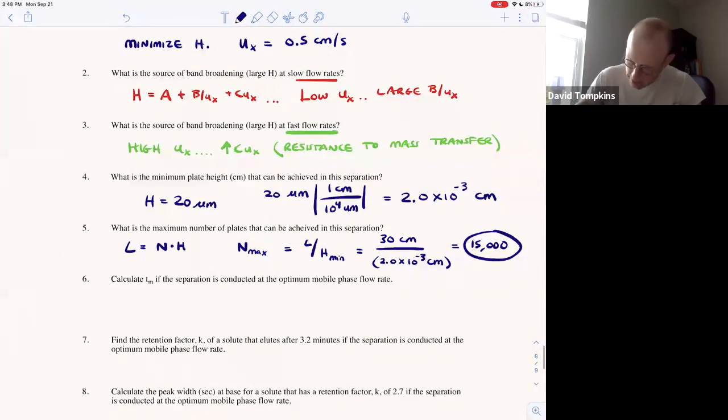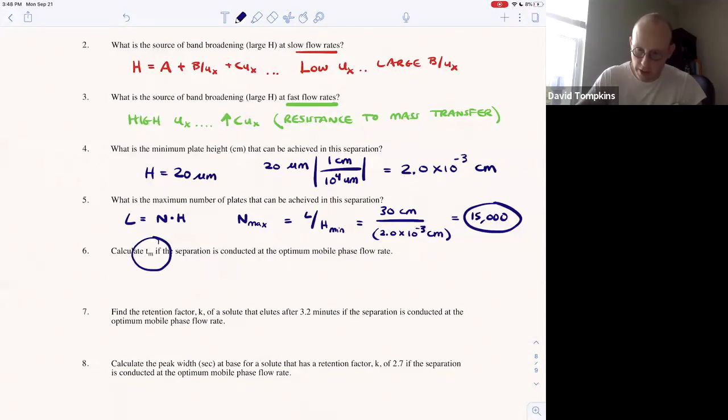The next calculation is for TM. If the separation is conducted at optimal flow velocity, we said that the flow rate needs to be 0.5 centimeters per second.